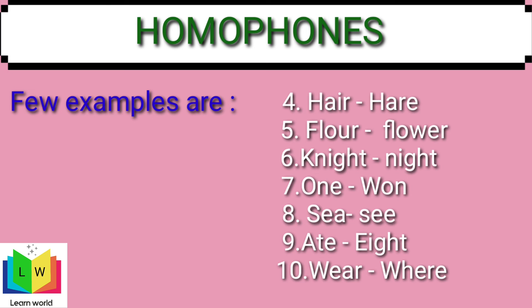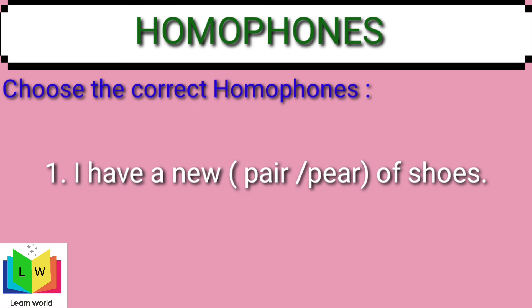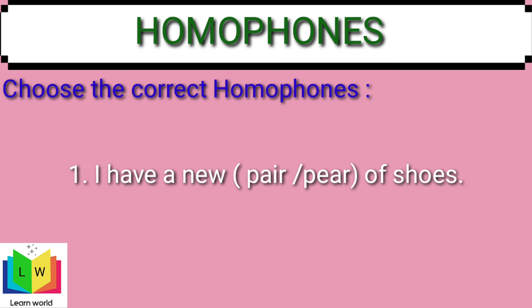Now it's time to find out the correct homophones in the given sentences. The first one is: 'I have a new pair of shoes.' Which 'pair' is used? You have to know the meaning of the word, then only you can easily find out the suitable homophone. The answer is 'pair' — P-A-I-R.